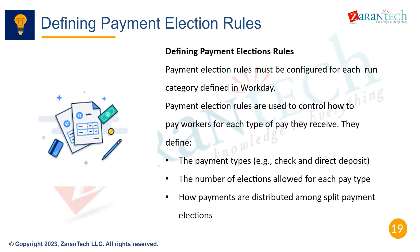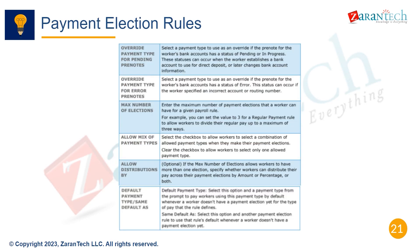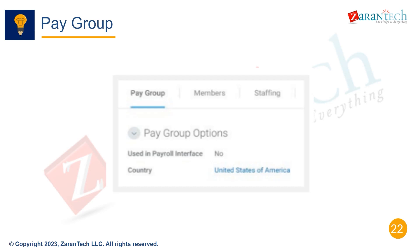The Off-Cycle tab defines configurations for off-cycle and on-demand replacement runs. Payment Election Rules, configured per run category, control how workers are paid for each pay type, including number of elections and payment distributions, as well as payment types allowed and distribution rules.